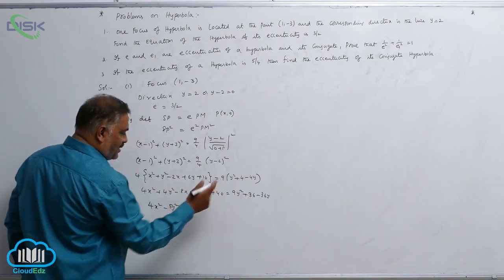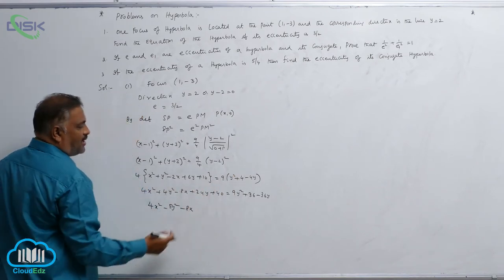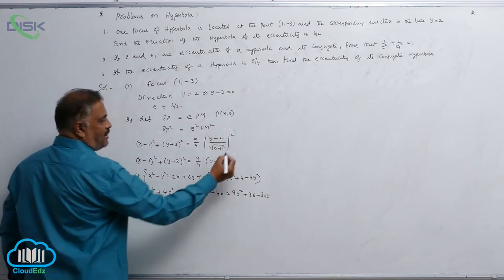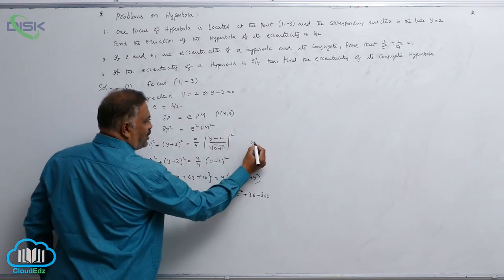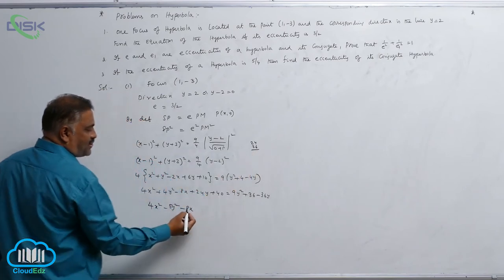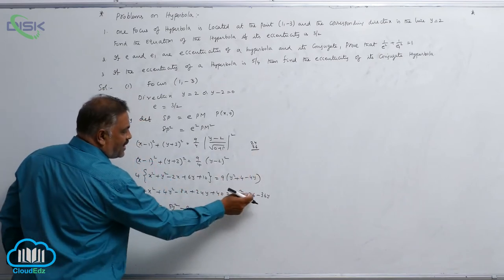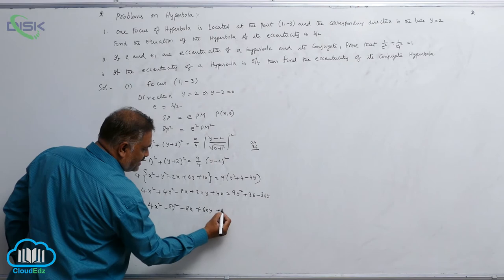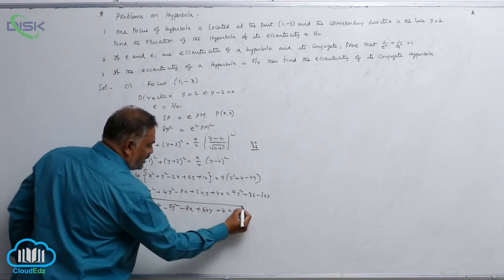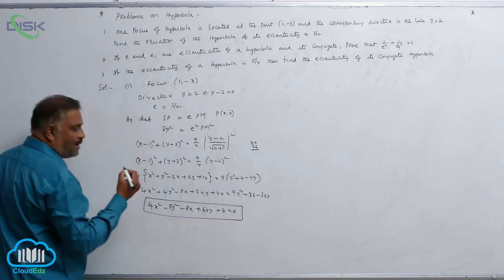Continuing simplification: -8x remains, and 24y - 36y gives -60y. Then 40 - 36 = 4. So the final equation is 4x² - 5y² - 8x - 60y + 4 = 0. This is the equation of the hyperbola.